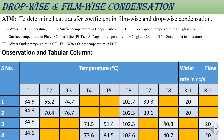Serial numbers three and four in the table correspond to film-wise condensation temperatures, while serial numbers one and two correspond to drop-wise condensation temperatures. Make sure you fill this table properly. The cooling water flow rate — one is for drop-wise and one is for film-wise. If you maintain the same flow rate for both, there is no confusion. We have maintained the same flow rate of 20 cc per second.